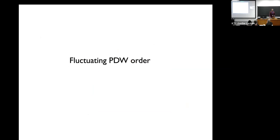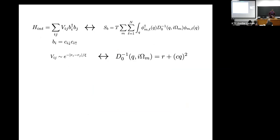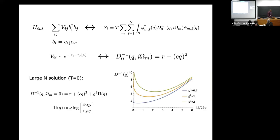Let me tell you why the most reasonable thing — short-range BCS interactions — fails for this program. I call this an 'actually failed pair density wave' approach. The bare interactions determine the bare bosonic propagator. For instance, if I study an exponential form of v_ij, in Fourier space the bare propagator has the Ornstein-Zernike form: a constant plus q squared.